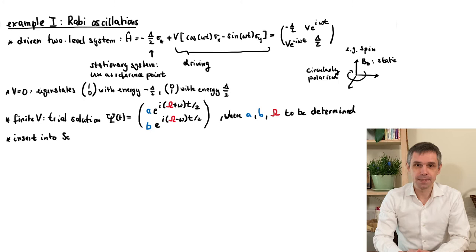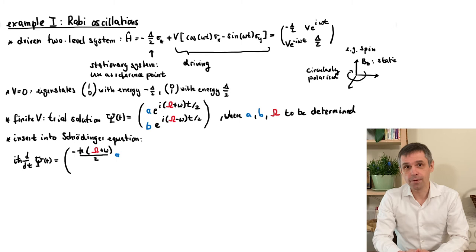Well, to see if this indeed works out, we insert the trial solution into the Schrödinger equation. That means that we first work out the two sides separately and then equate them. The temporal derivatives are very simple, because time only appears in these exponentials, and according to the chain rule, we then just get some additional constants multiplied to the components.